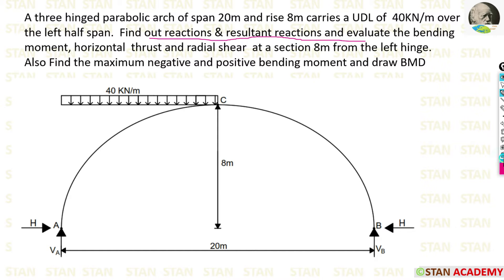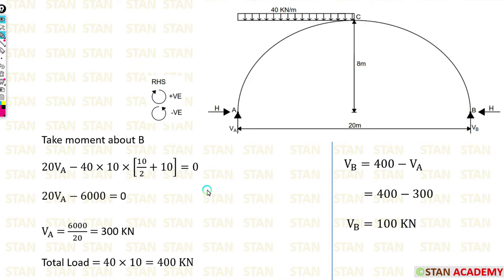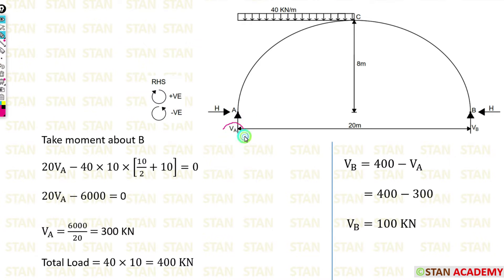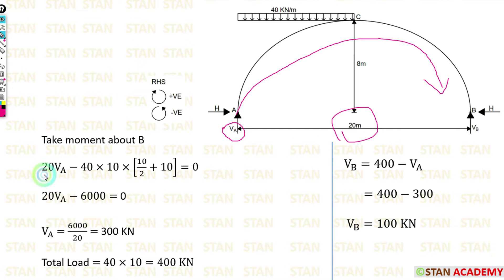First, let us calculate the reactions and resultant reactions. I am going to find out the vertical reaction at point A, VA. For that I am going to take moment about point B, moving towards the right-hand side. Clockwise is positive, anticlockwise is negative. VA is acting towards point B in the clockwise direction, so positive, and the distance is 20 meters — so 20·VA.